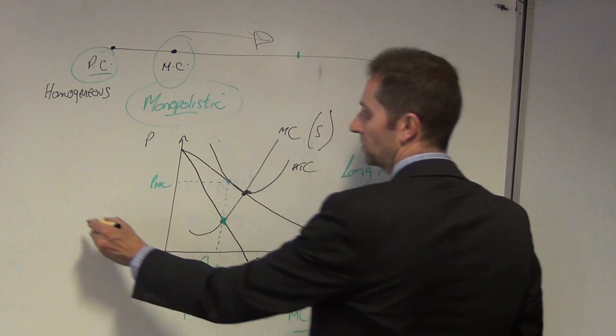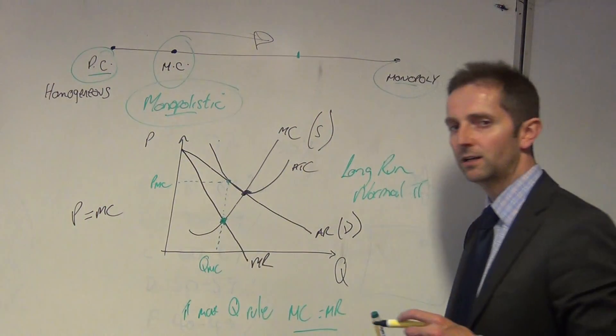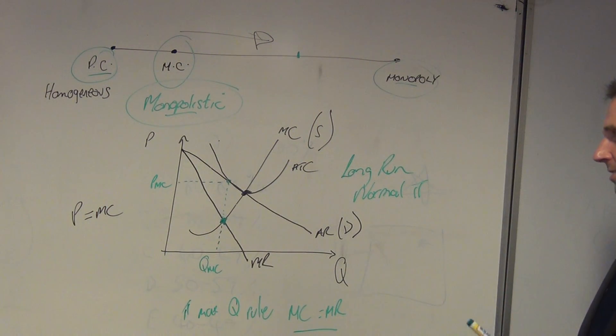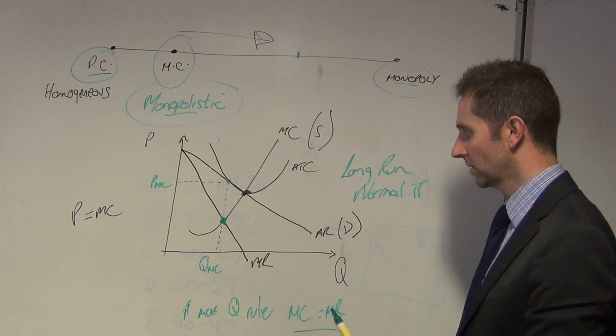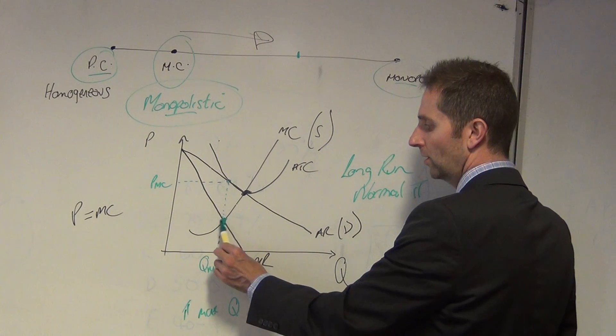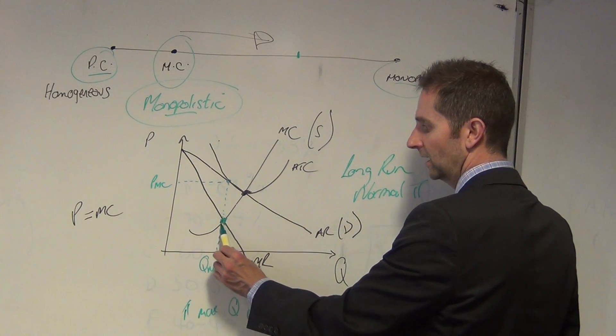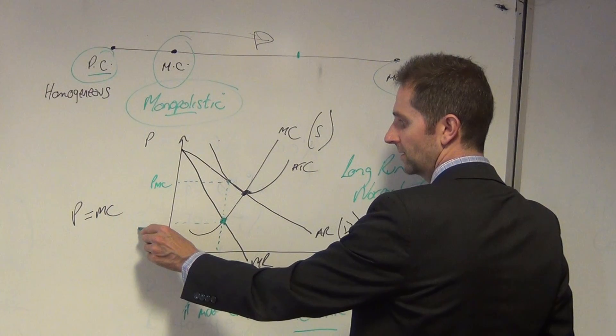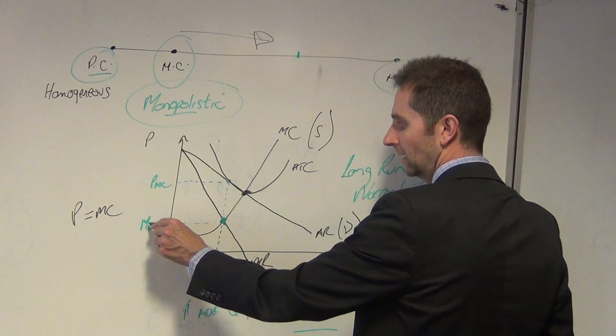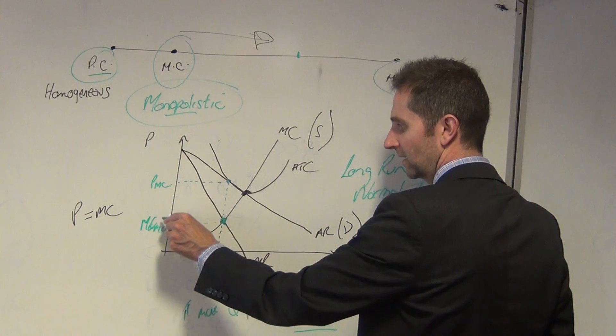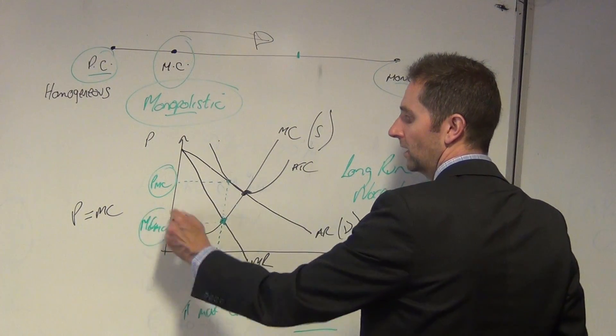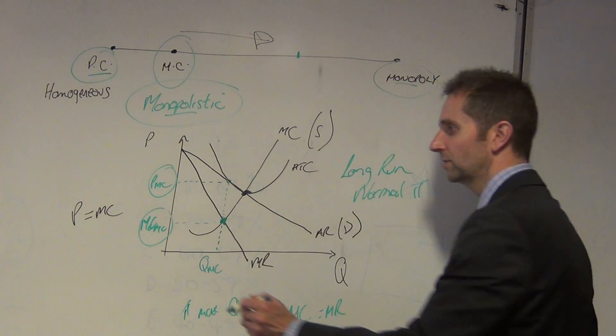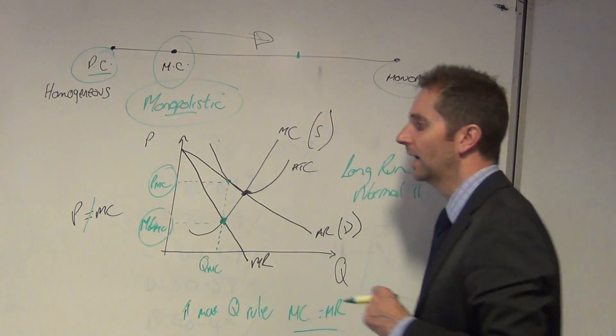So is it allocatively efficient? Does the price equal the marginal cost? I ask myself, and I look at the diagram, and I see that that is not the case. Why is it not the case? Same as my previous explanation on monopoly. If you haven't already checked it, go and have a look at it. But the marginal cost of producing QMC is at this point. So that's the MC, the marginal cost of the monopolistically competitive firm, MCMC. Hope that's not too confusing. But you can see that price is greater than the marginal cost, and so it's certainly not allocatively efficient.